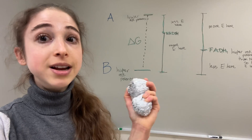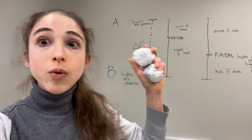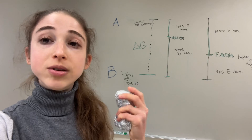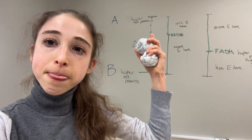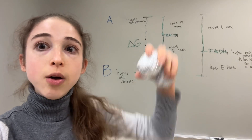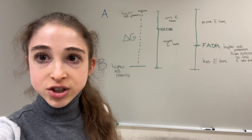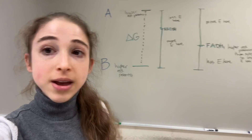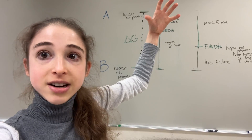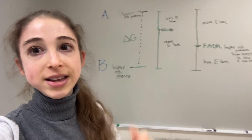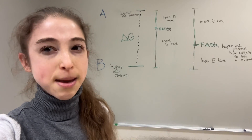So, reduction means gain — B wants to gain electrons, so it will take electrons from A. And when this happens, we get energy. We have that potential energy coming from the difference between the potentials of A and B.